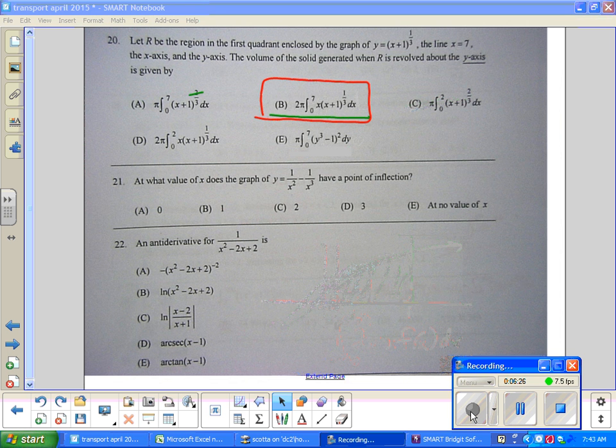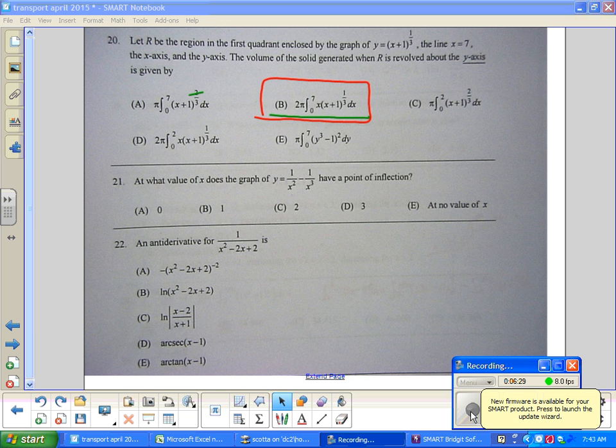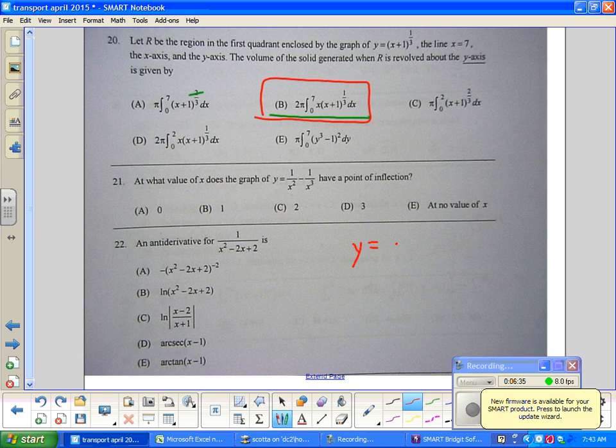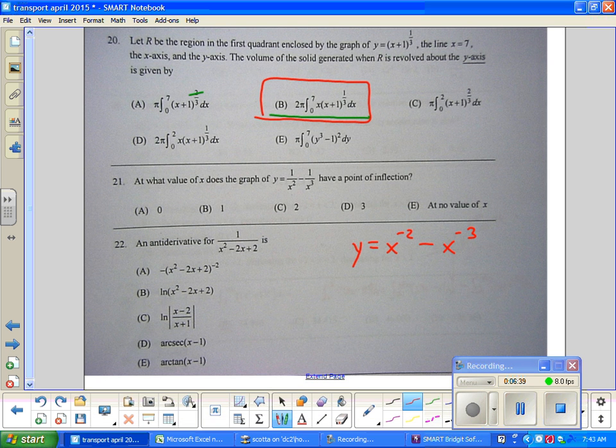Problem 21: At what value of x does the graph y equals 1/x² - 1/x³ have a point of inflection? You have to do some derivatives here. I'm looking for an inflection point. So I'm going to start with that y equals this. I want to work with everything in the numerator. So y' is -2x^(-3) plus 3x^(-4). And y'' is 6x^(-4) minus 12x^(-5).